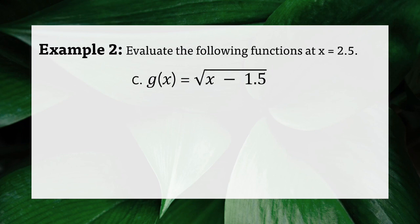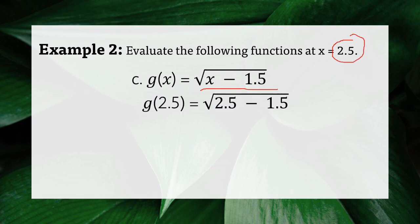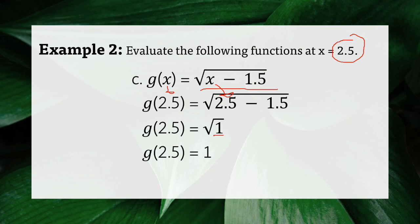For letter C, g of x equals square root of x minus 1.5, with x equals 2.5. Substitute 2.5 into the variable x. So g of 2.5 equals the square root of 2.5 minus 1.5. What is 2.5 minus 1.5? That equals 1. So we have the square root of 1, which is 1. Therefore, g of 2.5 equals 1.